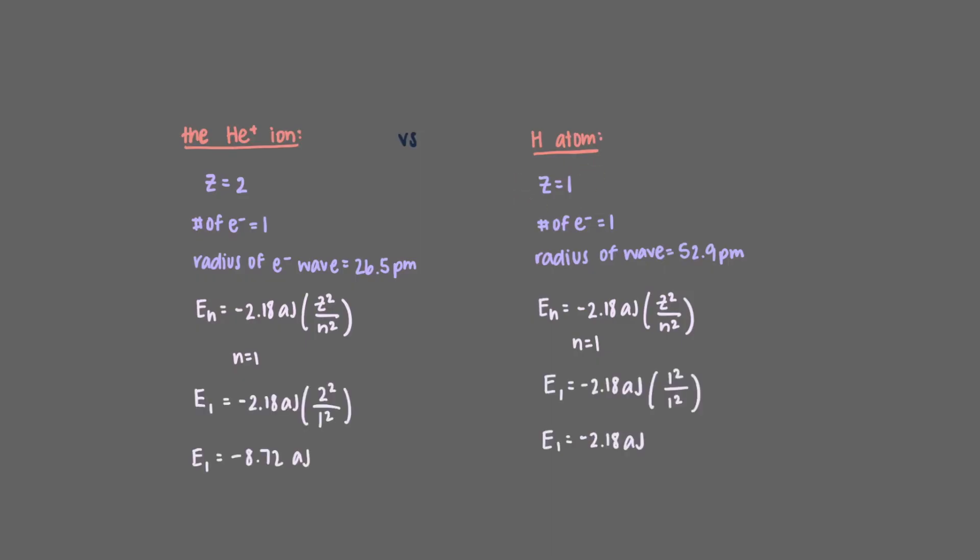This means that, since z is in the numerator in this equation, the energy of the helium ion's electron wave will be more negative than the energy of hydrogen's electron wave. So the greater the nuclear charge of a single electron atom, the lower in energy its electron wave will be.